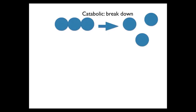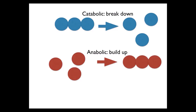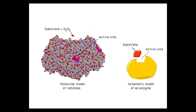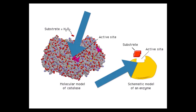Enzymes lower the activation energy of a reaction. Two terms to be familiar with: catabolic means to break down, and anabolic means to build up. Catalase is an enzyme found in almost all living cells, especially eukaryotic cells; it breaks down hydrogen peroxide into water and oxygen — so the enzyme is catalase and the substrate is hydrogen peroxide. Most enzyme names end in '-ase'. Enzymes are globular proteins with an active site where a substrate binds; this active site is made up of only a few amino acids and forms a hollow depression within the large enzyme molecule.